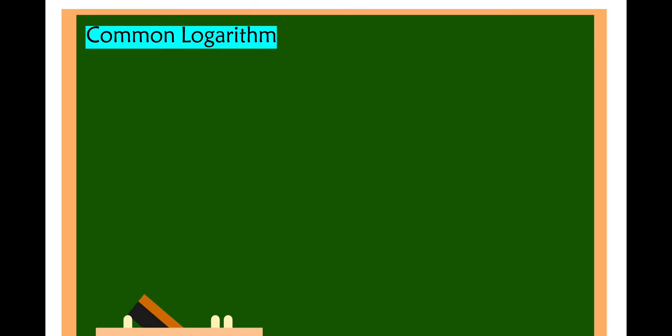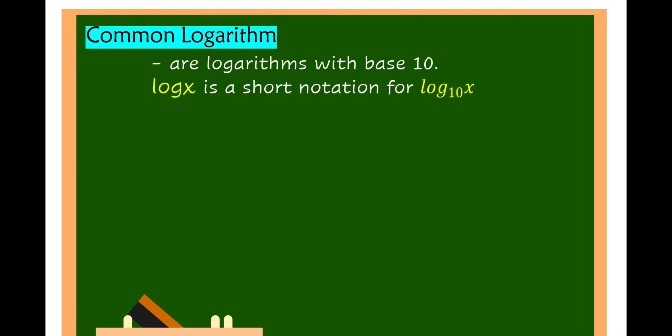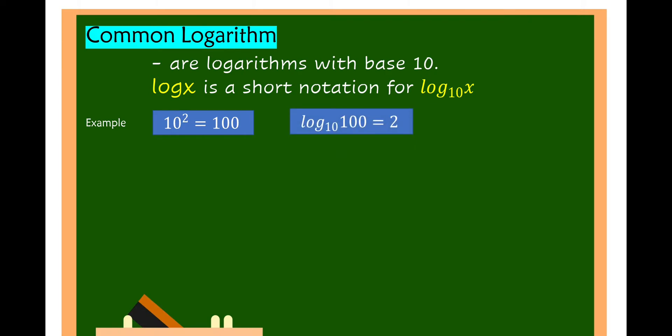Common logarithms are logarithms with base 10. That is, log of x is a short notation for log of x to the base of 10. For example, 10 squared is equal to 100, or that is log of 100 to the base of 10 is equal to 2. In common logarithm, we don't need to write base 10 anymore, so this will be log of 100 is equal to 2.